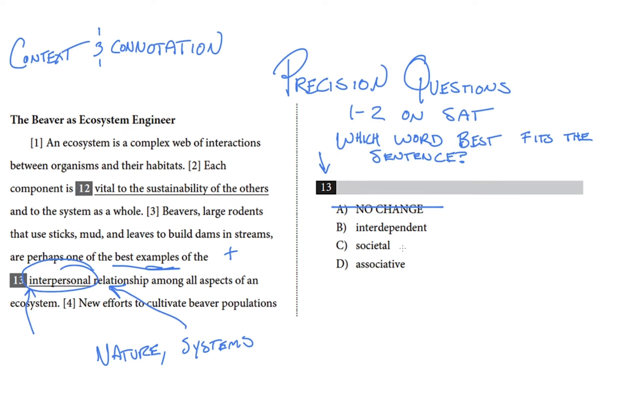Choice C, societal, has, for me, too much of a human civilization connotation to it. Beavers may have a society, but we're not just talking about beavers on their own. This passage is about how beavers relate to a broader ecosystem made up of trees and sticks and streams. And these things can't have societies because they are not social animals like beavers or humans. So I'm going to cross off C for the same reason as A because it's too people-y.